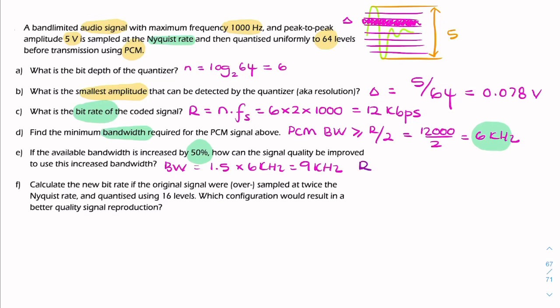So with a bandwidth of 9 kilohertz, we'd have a bit rate, R, of at least twice that. So we'd have up to 18,000 bits per second.